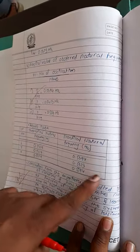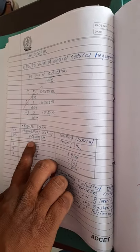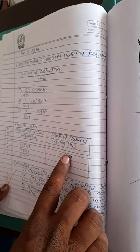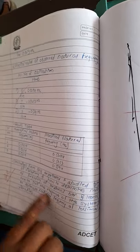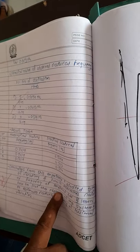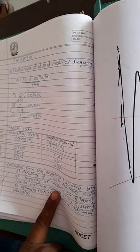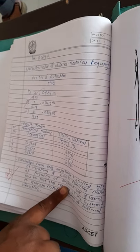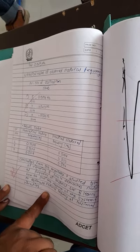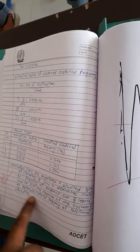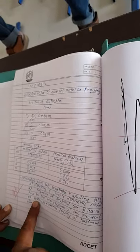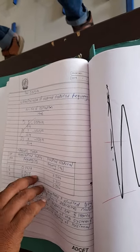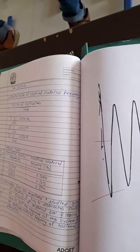Then last, this is a result table in which we have to compare theoretical natural frequency with practical natural frequency. Conclusion from this experiment: we have to study the type of vibratory system to determine the natural frequency of the given plate which is attached to the stream in the experimental setup, and we have to find natural frequency and compare theoretical natural frequency with practical natural frequency.